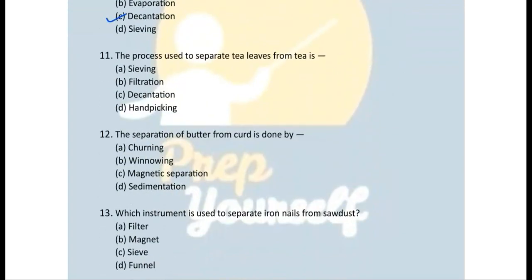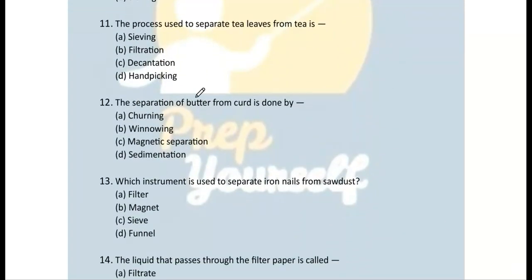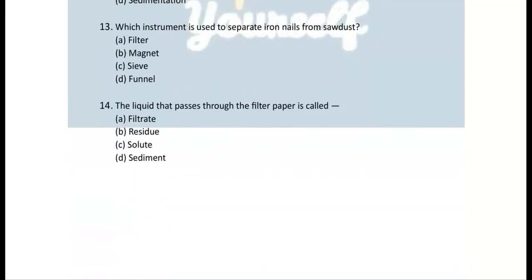Question 11: The process used to separate tea leaves from tea — this happens every day in every household — is called sieving. Question 12: The separation of butter from curd is done by churning. Question 13: The instrument used to separate iron nails from dust is a magnet.